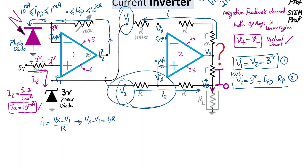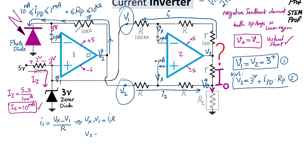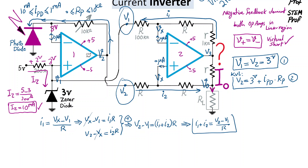The second KVL at the lower side of the circuit gives: V2 − Vx = I2 × R. Adding the two equations together, Vx cancels, yielding V2 − V1 = (I1 + I2) × R. Therefore, I1 + I2 = (V2 − V1) / R — equation three.